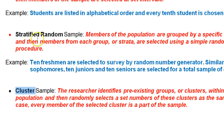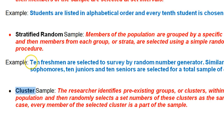Another one is called stratified random. That's where, if there are different categories — like say if we're talking about a high school where you have freshmen, sophomores, juniors, and seniors — you might say we're going to make sure that we survey 50 freshmen, 50 sophomores, 50 juniors, and 50 seniors. But within each one of those categories, you're still going to randomly pick your 50 freshmen, randomly pick your 50 sophomores, etc. Because you're guaranteeing ahead of time that you're going to have a certain number of each category, those are your strata — that's what makes it stratified.